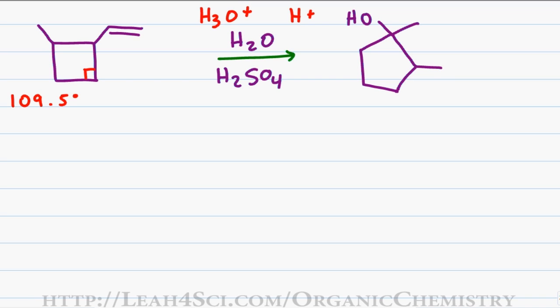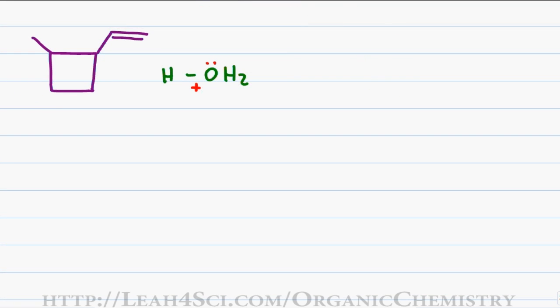Taking that into account, let's begin the mechanism. As with any alkene reaction, the pi bonds reach out and grab a hydrogen, collapsing the bonding electrons onto the oxygen. The hydrogen will add to the primary or Markovnikov position, giving me a secondary carbocation.